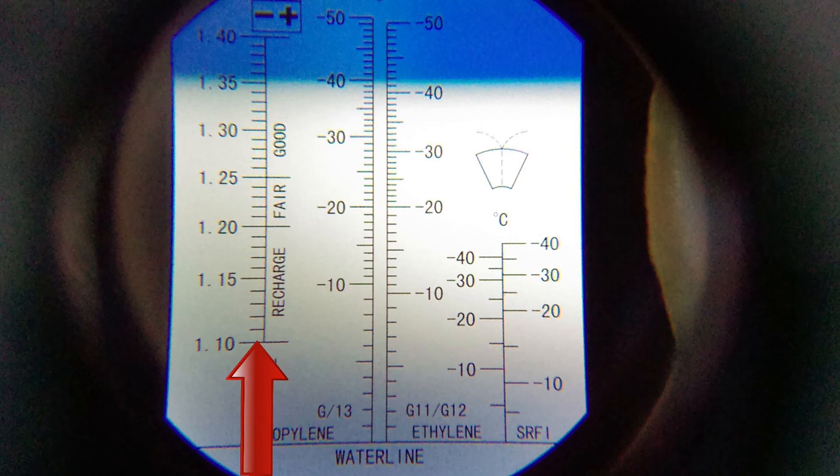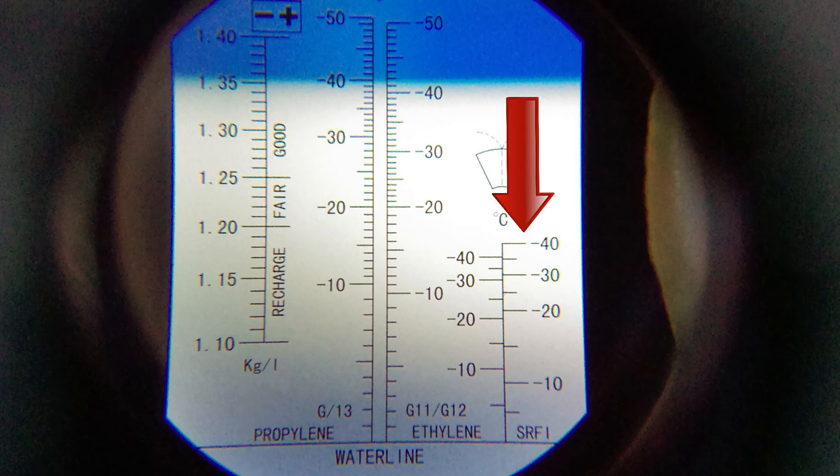And if you were wondering, the scale on the left of my refractometer is for testing battery acid, and the scale on the right is for windscreen washer fluid.